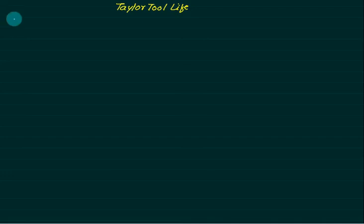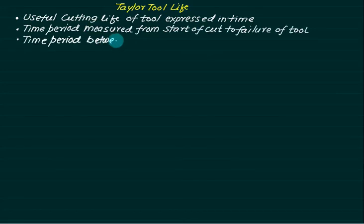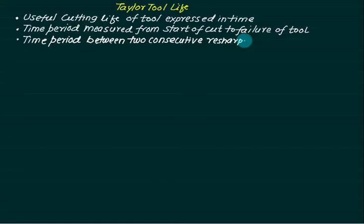Taylor's tool life is defined as the useful cutting life of a tool expressed in time. Sometimes it is defined as the time period measured from start of the cut to failure of the tool, or the time period between two consecutive resharpenings or replacements. There are other ways also: actual cutting time to failure, length of work cut to failure, volume of metal removed to failure, and number of components produced.